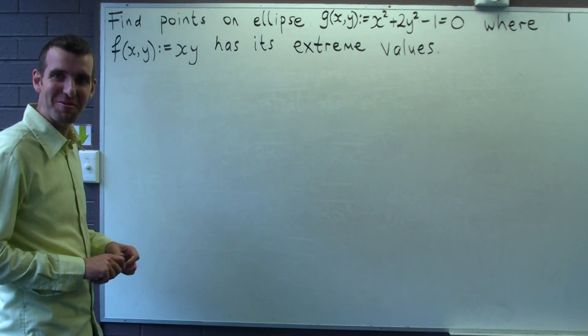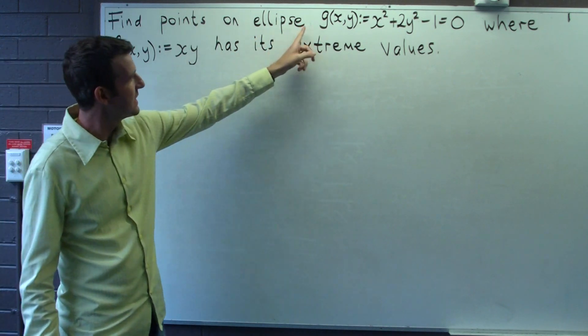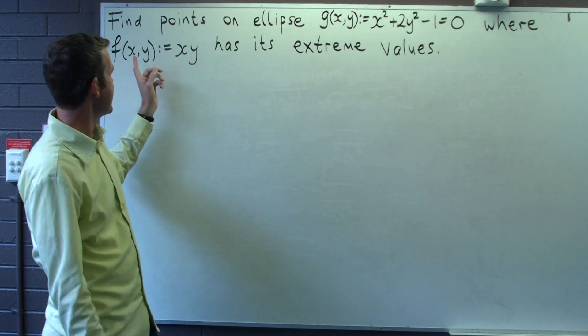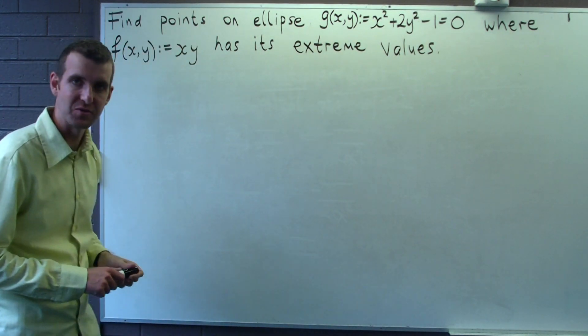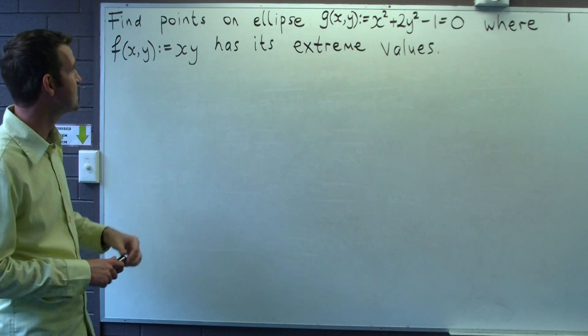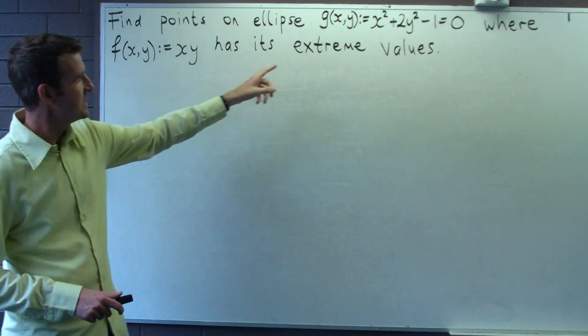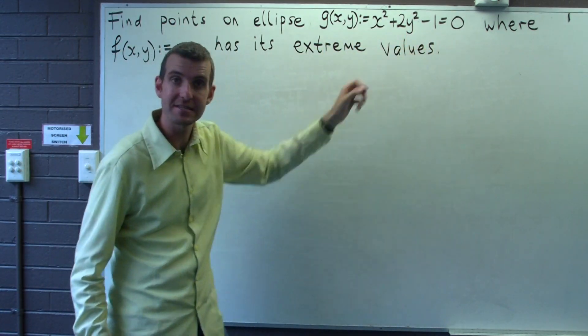Let's have a look at the following problem. We are asked to find the points that lie on the ellipse given by this equation where the function f has its extreme values. So basically what we want to do is find those points that maximize and minimize f subject to the constraint that the points must lie on the ellipse.